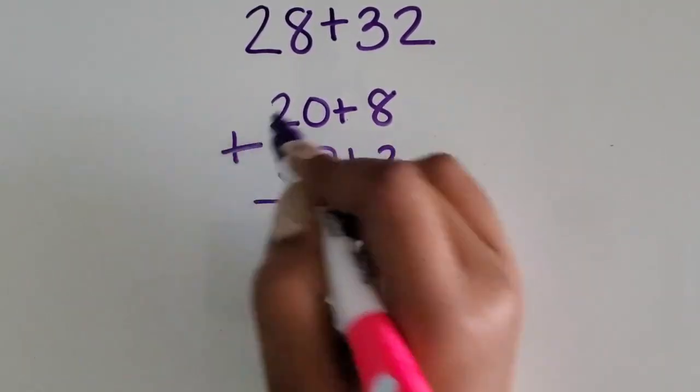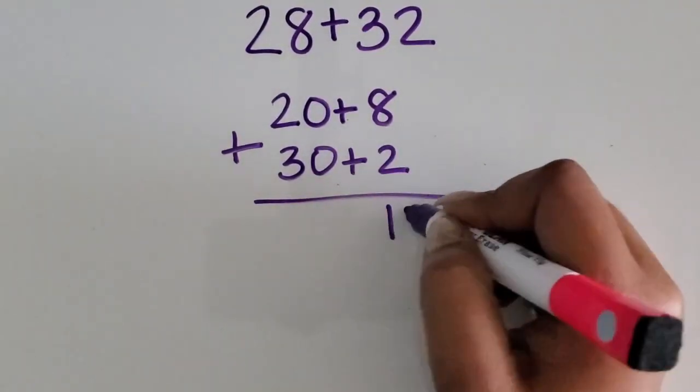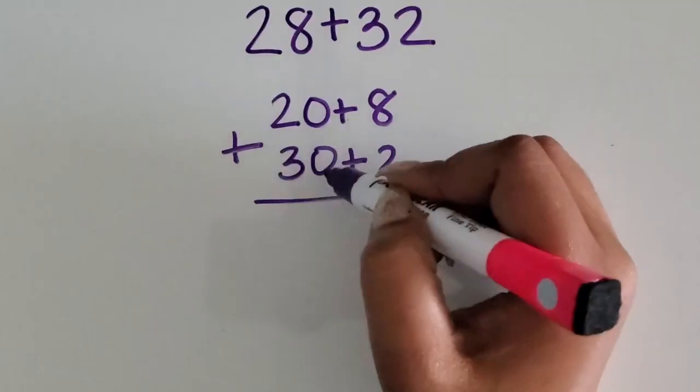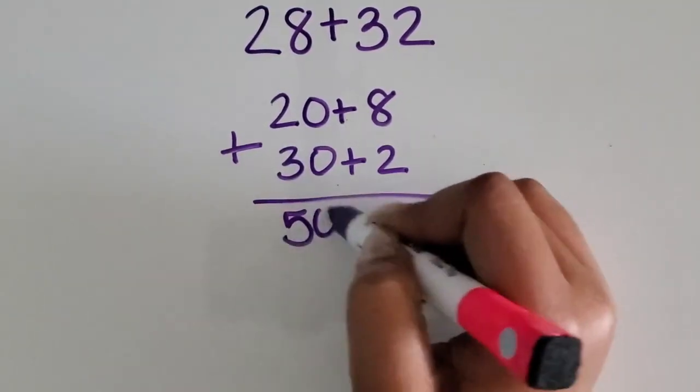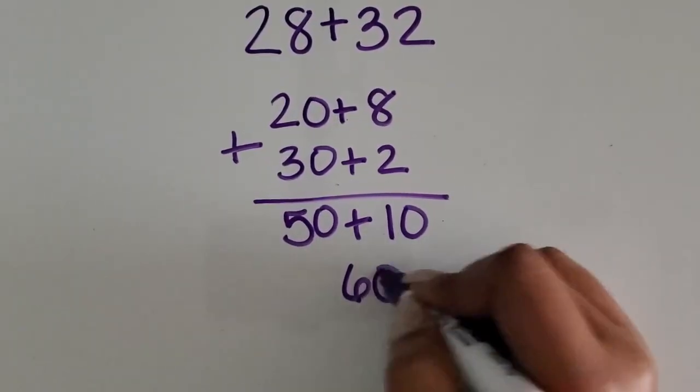Now we're going to add the two numbers together. Eight ones plus two ones is 10 ones. 20 plus 30 is 50. 50 plus 10 is 60.